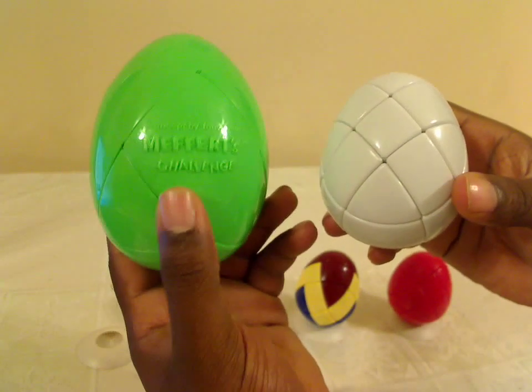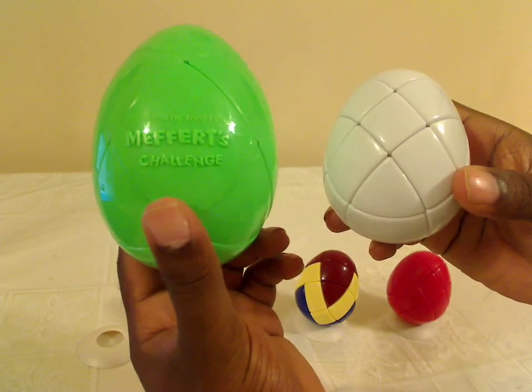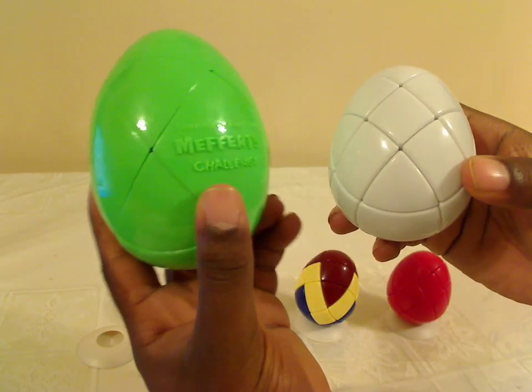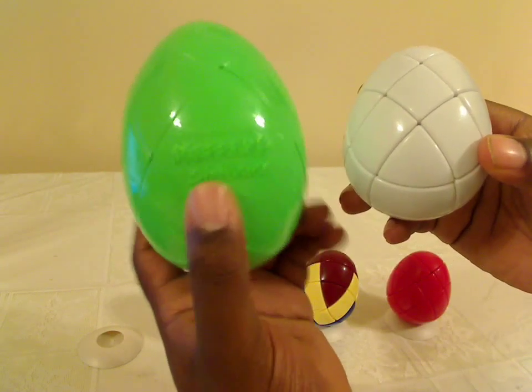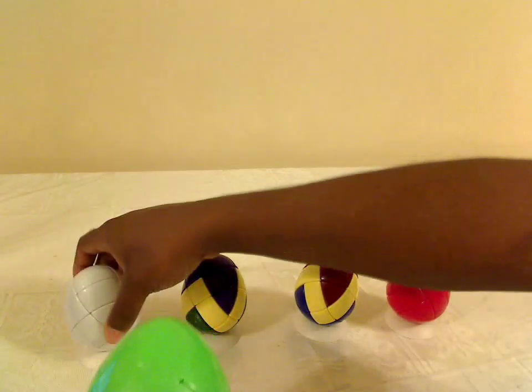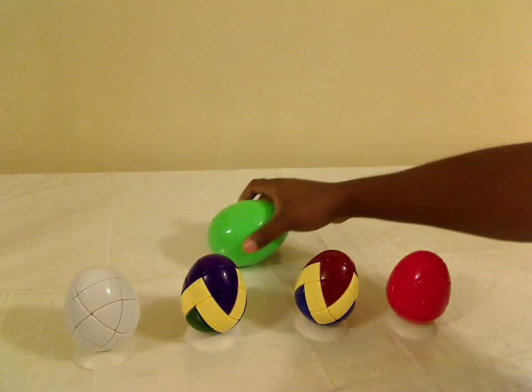And also, the Tony Fisher's Golden Egg has a different mechanism inside. It's based off of a puzzle called Scube, and so it moves differently than this puzzle over here does. I'll put this in the back.